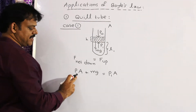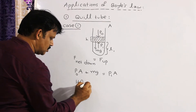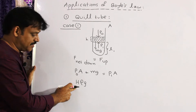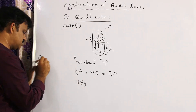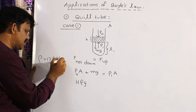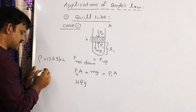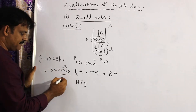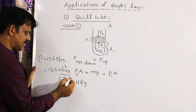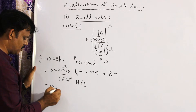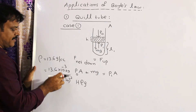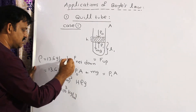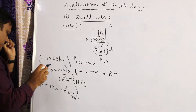Atmospheric pressure can be expressed as P0 = H·ρ·g, where capital H is the height of the mercury column. For atmospheric pressure, its height is 76 centimetres of mercury. Rho is the density of mercury — its value is 13.6 grams per cc, which equals 13.6 × 10³ kg per m³ in SI units.